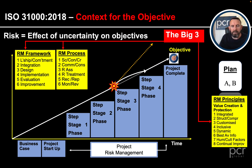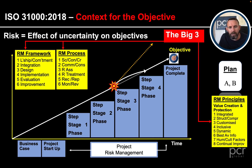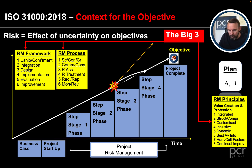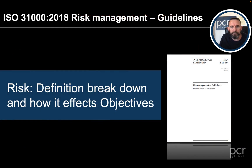By applying risk management - the big three of principles, framework, and process - we should get back on our trajectory to reach our objectives. That last movement on the screen illustrates this. It gives a good visual overview of how the big three are both inward and outward looking and encapsulate any projects we have. So that's the risk definition, its breakdown, and how it affects objectives. Thanks for watching.